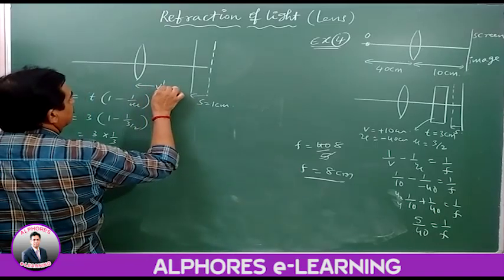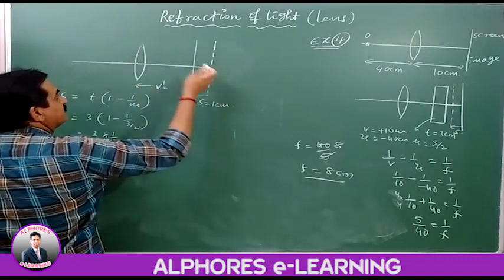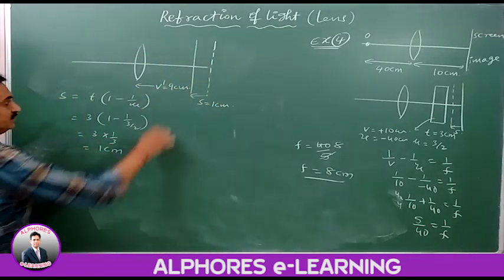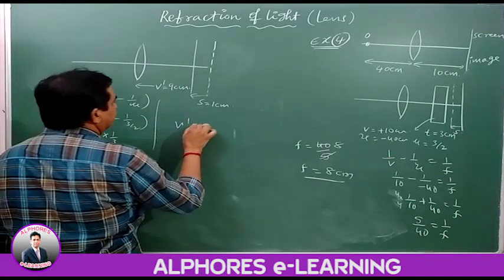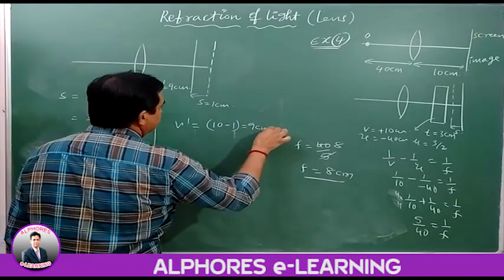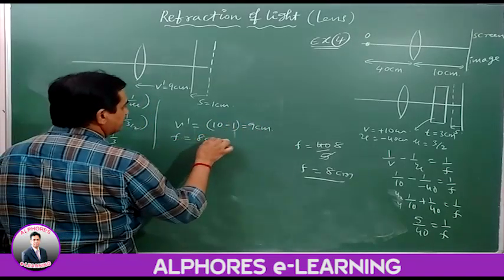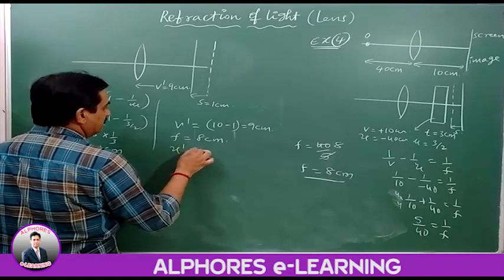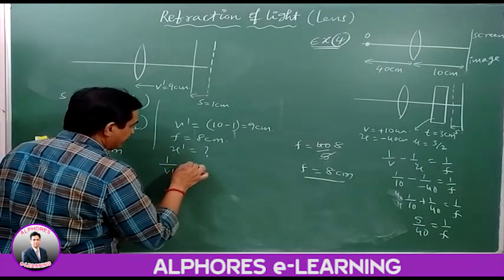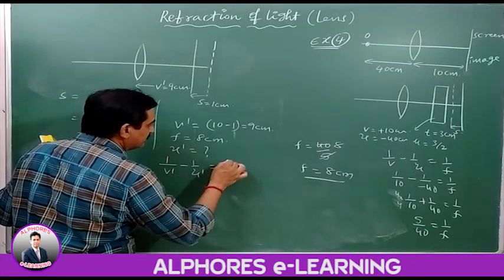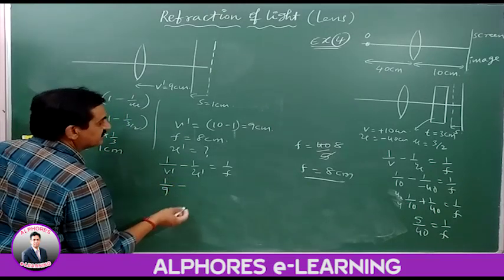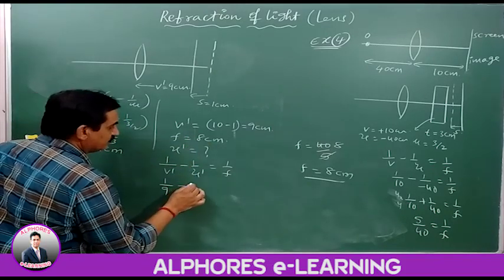The new effective image distance is V' = 10 − 1 = 9 centimeters. The focal length remains 8 centimeters. Now we need to find the new object position U' using the lens formula: 1/V' − 1/U' = 1/F, giving 1/9 − 1/U' = 1/8.